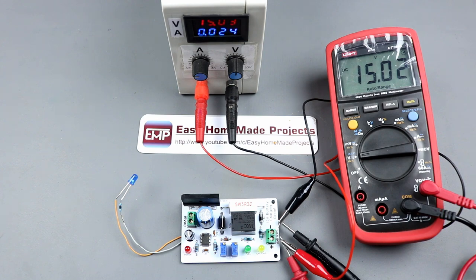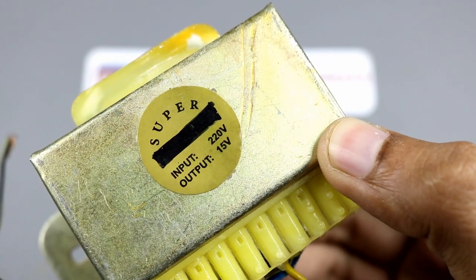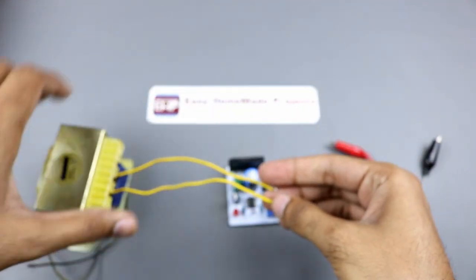As you can see our circuit is now calibrated. Now connect a 15V 4A transformer at the input of the circuit. Then our circuit will be ready for use.